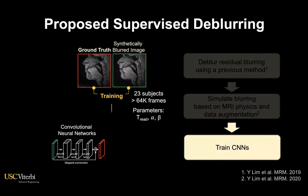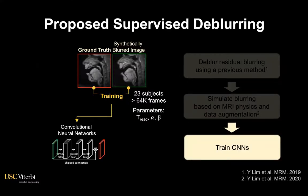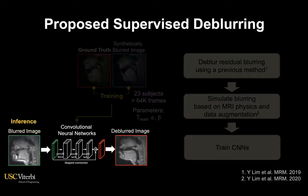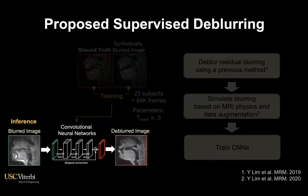We then train the architecture using the training data generated from 23 subjects. At test time, we perform deblurring for new blurred inputs in an end-to-end manner.